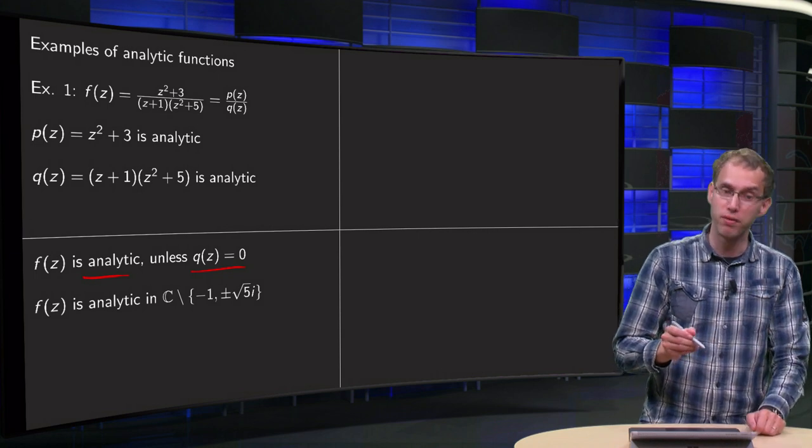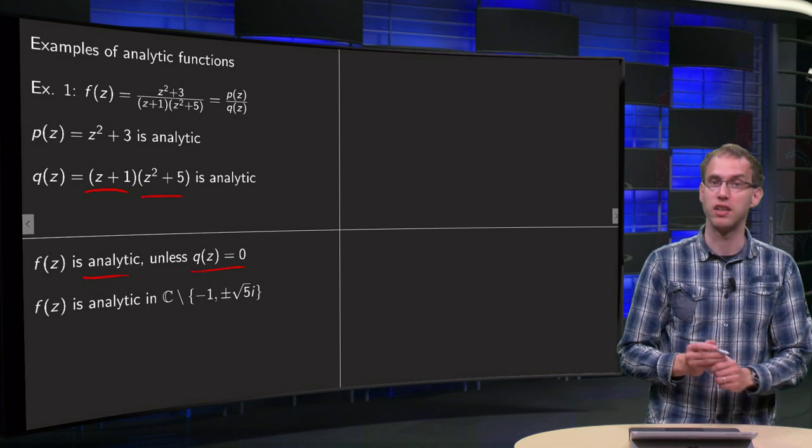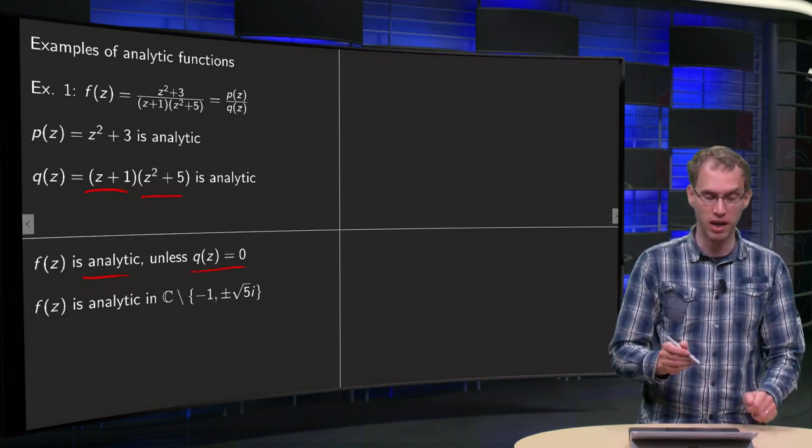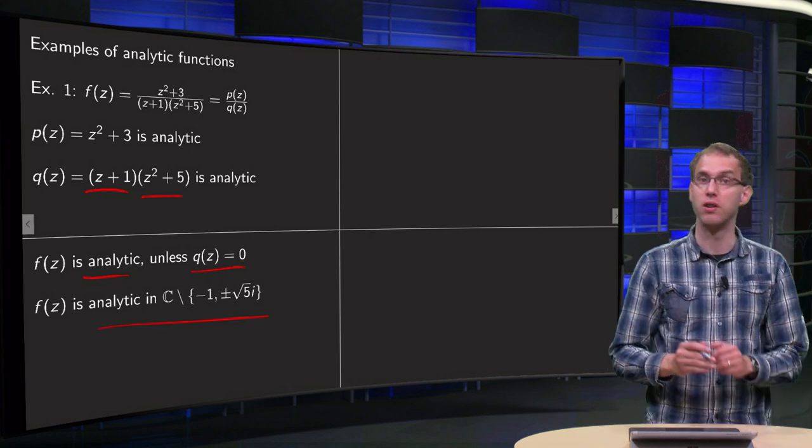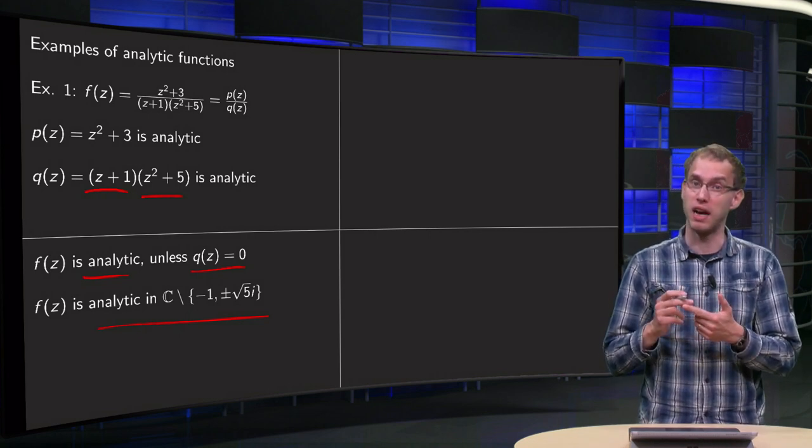Where do we have q equals 0? Well, at z equals minus 1, or at z equals plus or minus the square root of 5 times i. So f is analytic in all of C except at the points minus 1 and plus or minus square root of 5 times i.